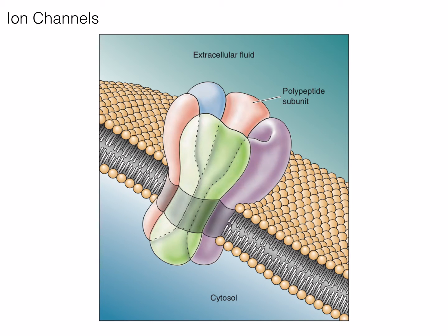Because ions are charged, they cannot readily diffuse through the membrane, therefore they need a little help. Ions can diffuse into the cell through either voltage-gated or ligand-gated ion channels. Voltage-gated ion channels snap open in response to a certain membrane voltage and subsequent changes in the surrounding electromagnetic field. Ligand-gated ion channels open in response to a specific ligand, typically a neurotransmitter that binds to the channel and induces a conformational change.